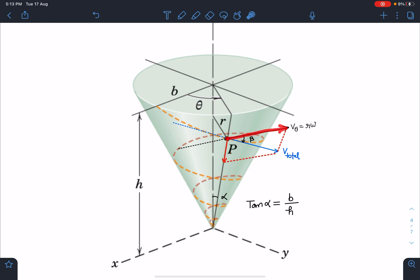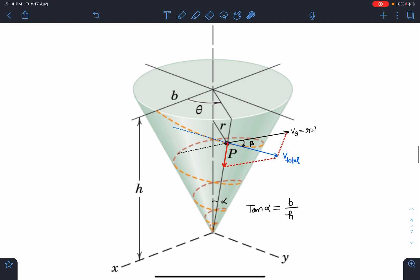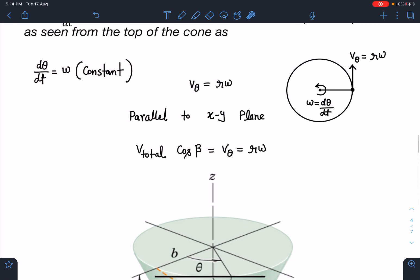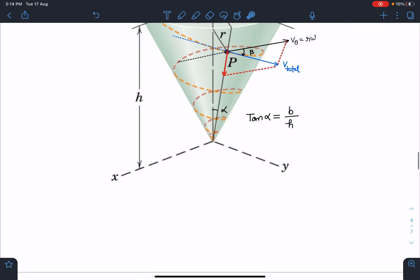We know the horizontal tangent component is rω, so we can write V_total cos β equals rω. V_θ is rω and V_total cos β is rω. From here, I will extend this. Now I'm going to see this geometry from the side.